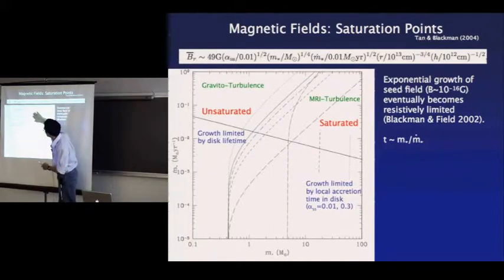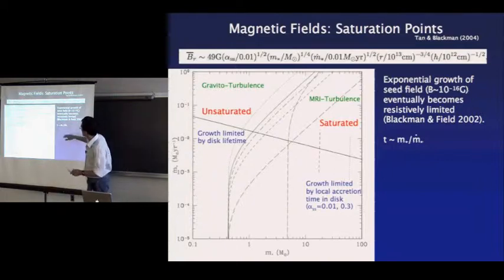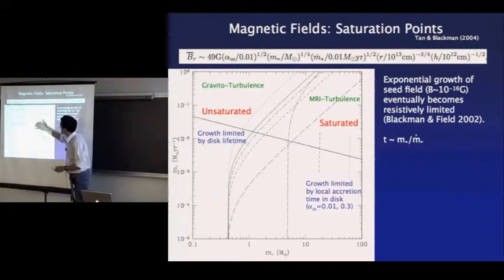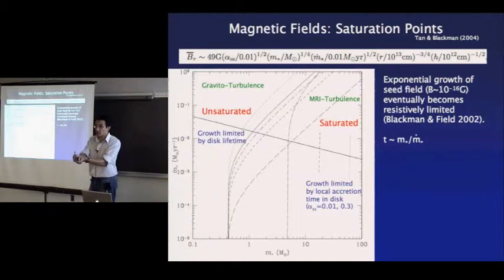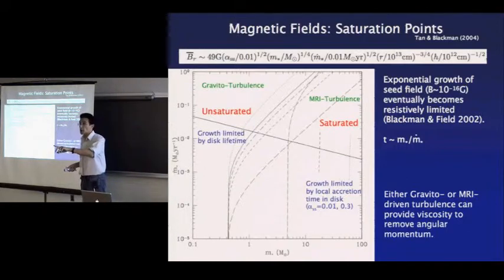If you start with some seed field, these different model lines make different assumptions about whether the field is frozen in the disk or diffusing at a fairly constant radial location. These dynamically important fields in the central part won't affect the feeding rate of the core, but their effects should not be neglected. In particular, they could provide another source of viscosity in the inner parts of the disk where self-gravity becomes harder to sustain.